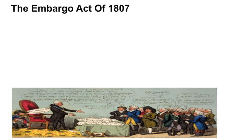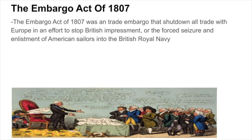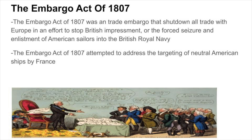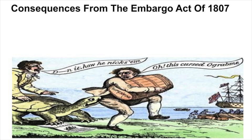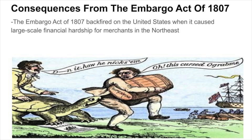This policy controversy came from the Embargo Act of 1807, a trade embargo that shut down all trade with Europe in an effort to stop British impressment — the forced seizure and enlistment of American sailors into the British Royal Navy. This act also attempted to address the targeting of neutral American ships by France. Ultimately, the Embargo Act of 1807 backfired on the United States when it caused large-scale financial hardship for merchants in the Northeast.